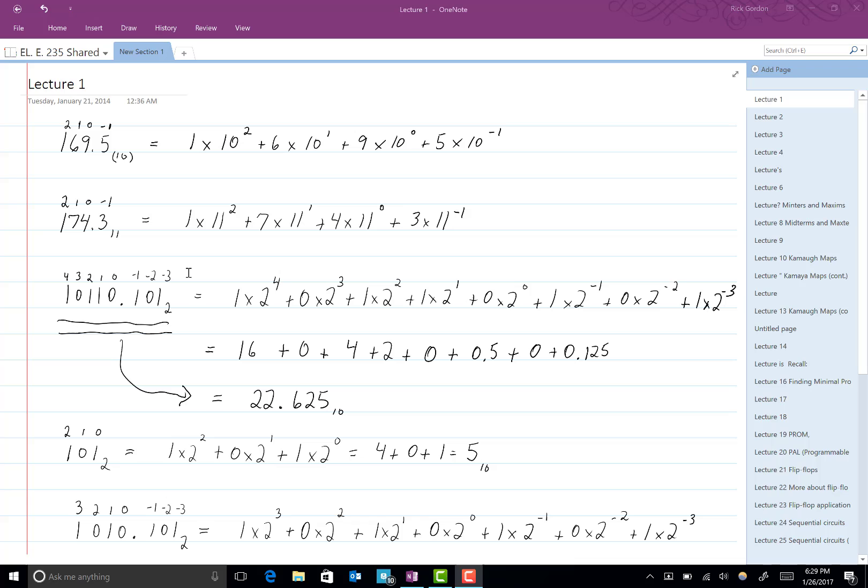Still another example now. If we had 10110.101 base 2, then we do exactly the same thing. We go to the point, we start numbering the positions to the left: 0, 1, 2, 3, 4. Numbering the positions to the right: negative 1, negative 2, negative 3. Then we'll expand this in the same way that we've been doing with the others.